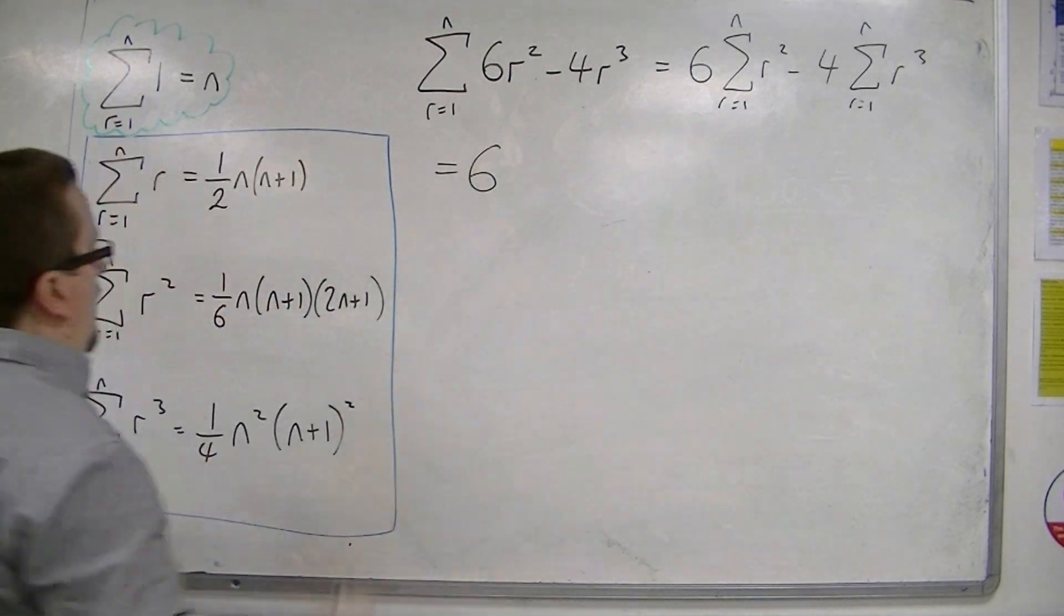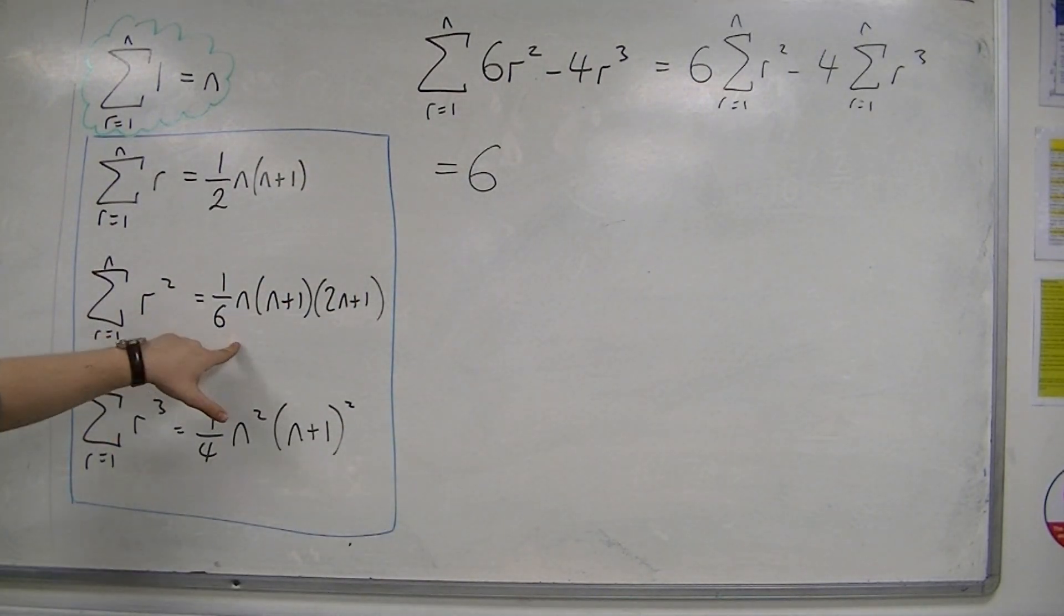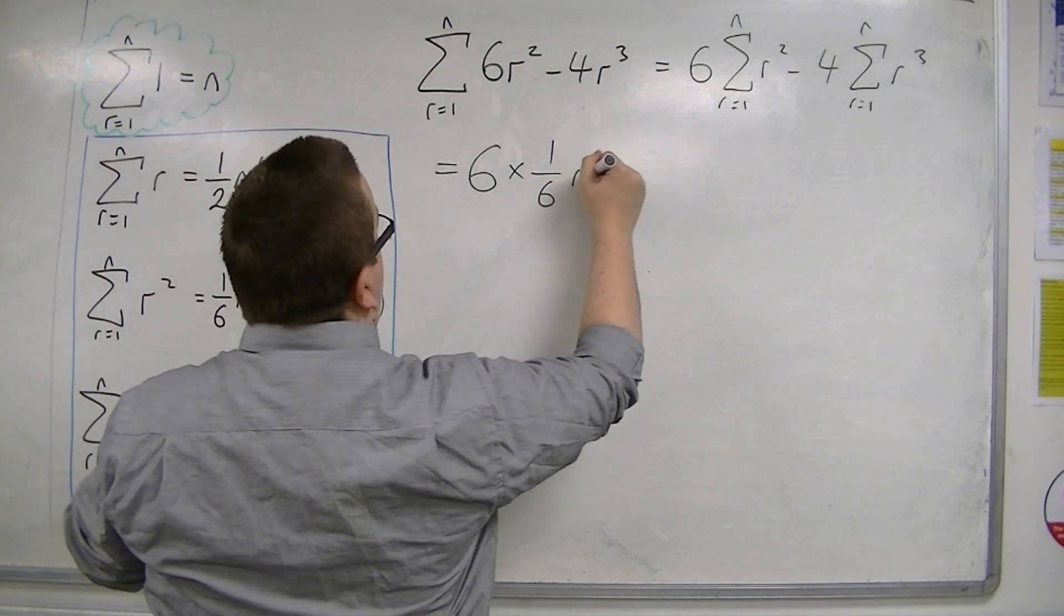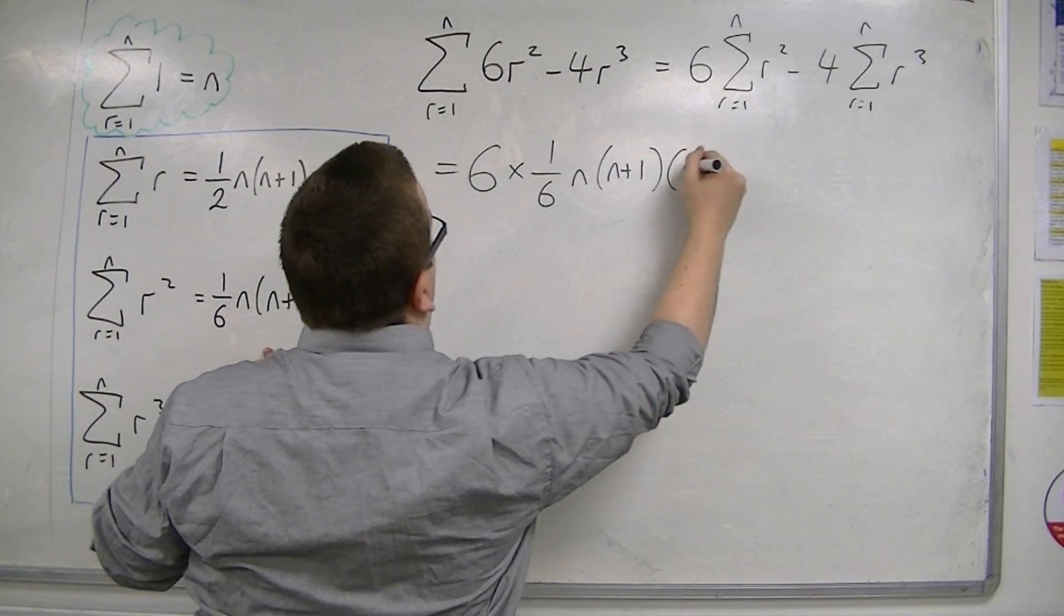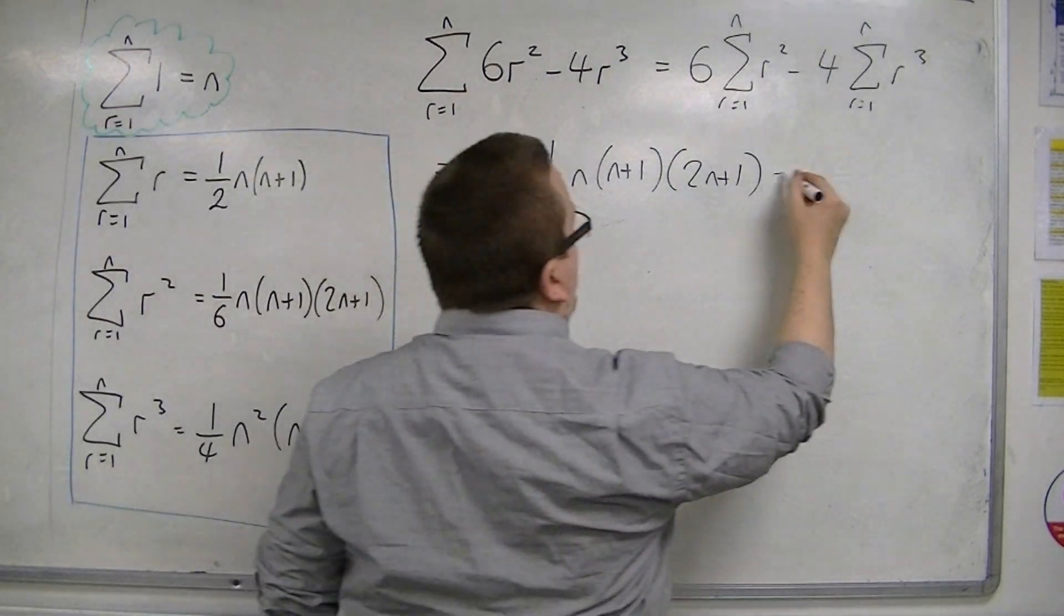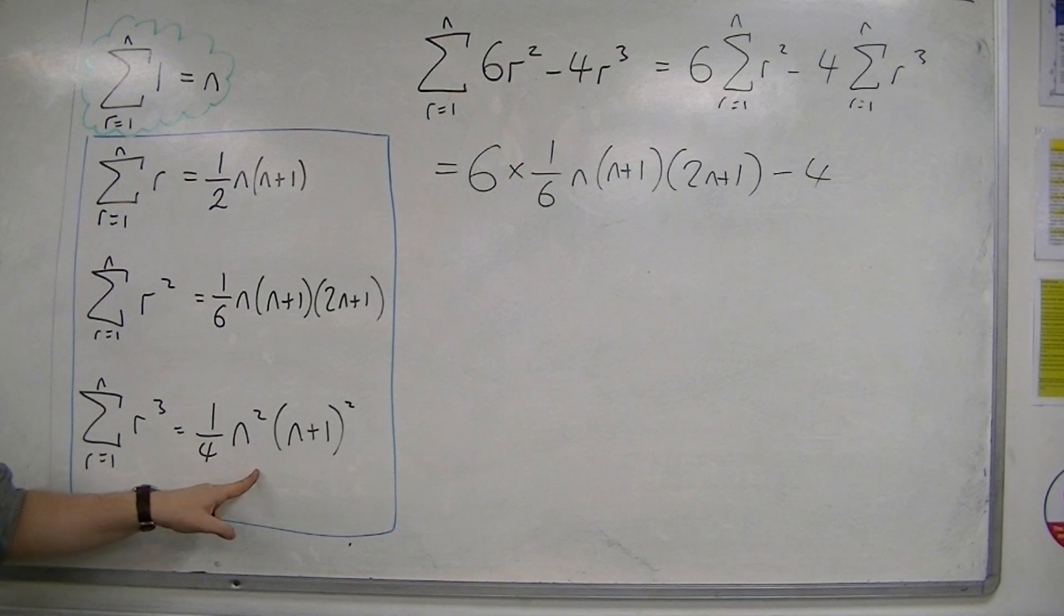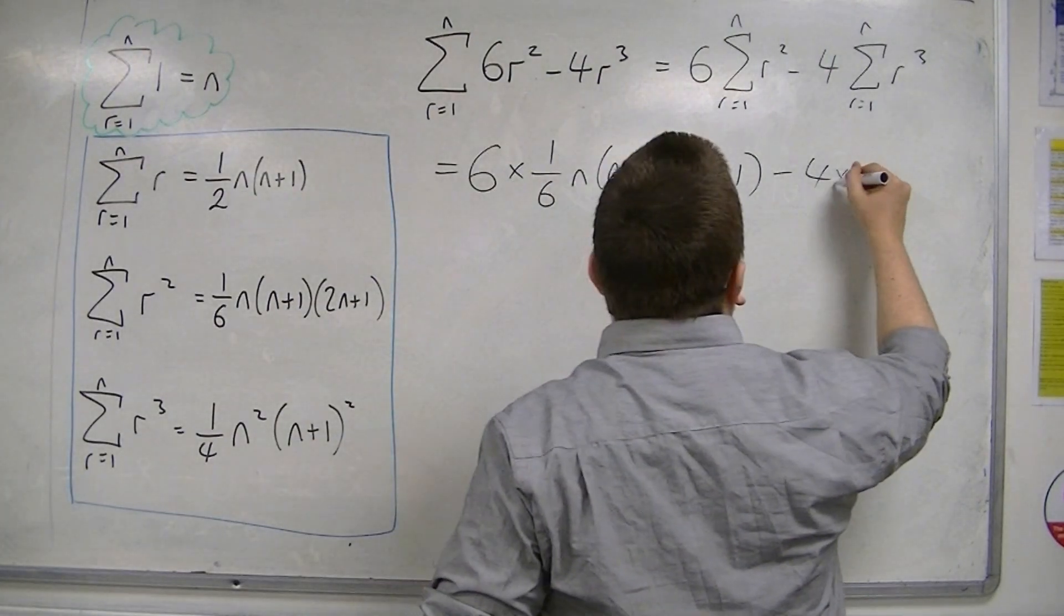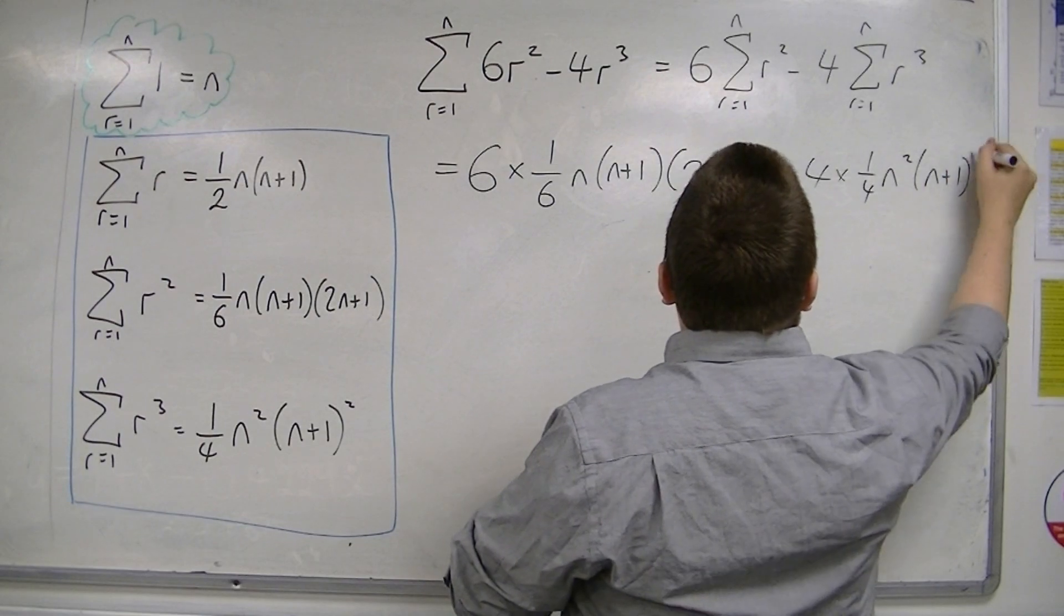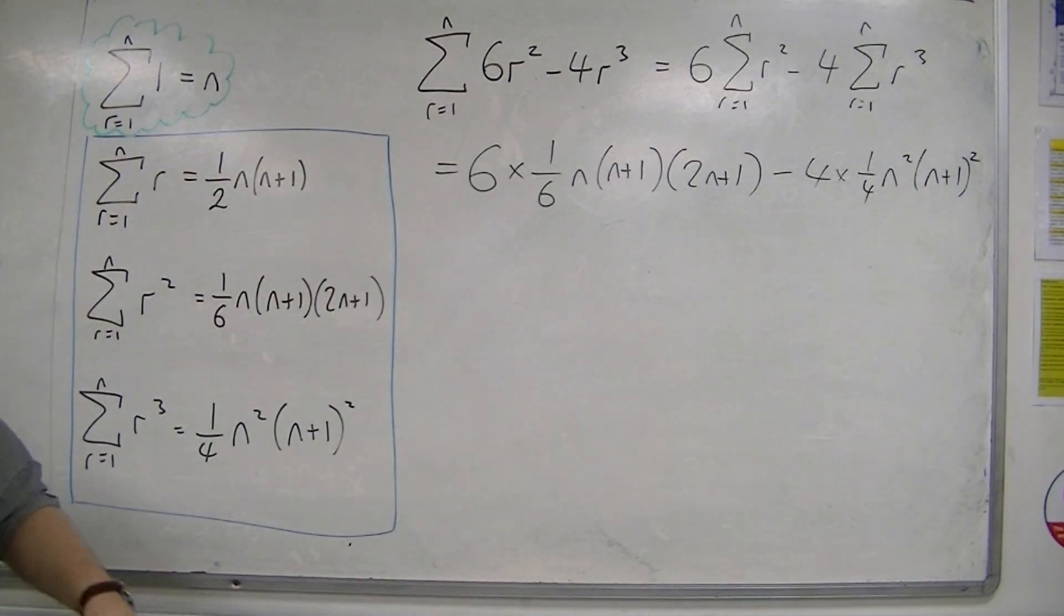So, we've got 6 lots of the sum of r squared, so 6 lots of this. So, 6 times one-sixth n, n plus 1, 2n plus 1. Take away 4 lots of this one. So, 4 lots of one-quarter, n squared, n plus 1 squared.